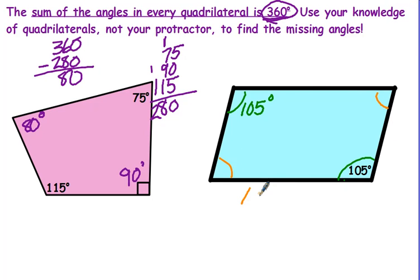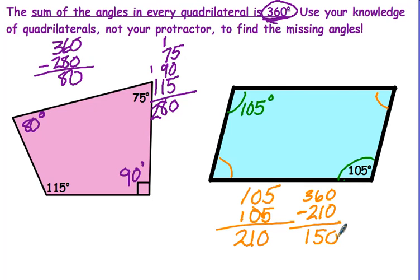So what we want to do is add up the ones we have, 105 and 105. So right now we have 210 degrees. Subtract that from 360, and we have 150 degrees. Now, we know that these are equivalent, so we're going to divide by 2, and now we know that each angle is 75 degrees.